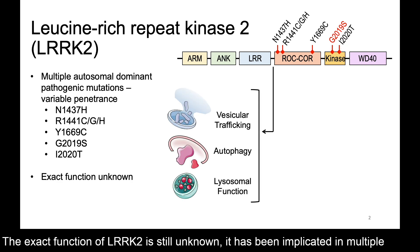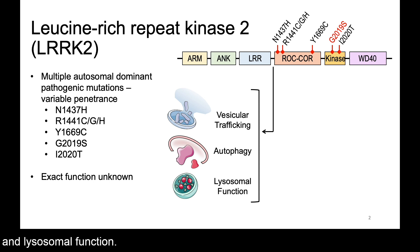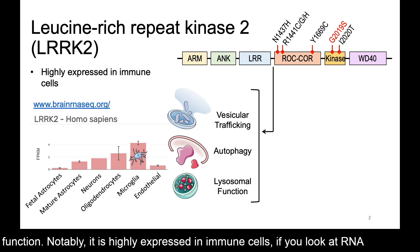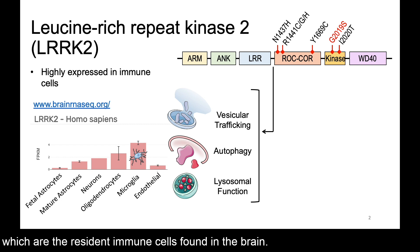The exact function of LRRK2 is still unknown. It's been implicated in multiple different cellular processes, including vesicular trafficking, autophagy, and lysosomal function. Additionally, there is mounting evidence that LRRK2 may play a role in immune function. Notably, it's highly expressed in immune cells. If you look at RNA sequencing data from the human brain, LRRK2 is most highly expressed in microglia, which are the resident immune cells found in the brain.